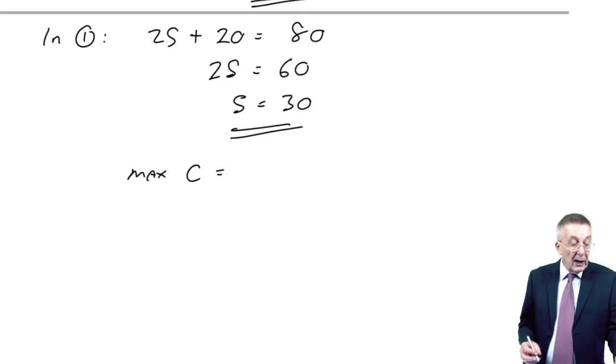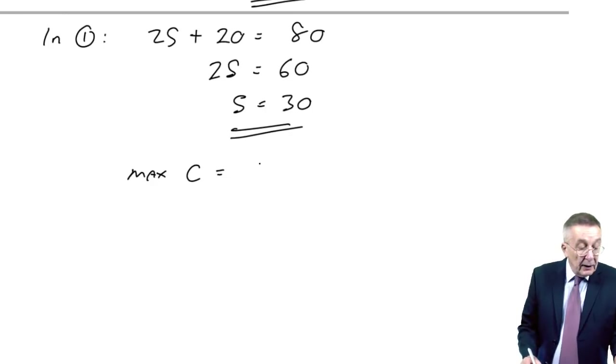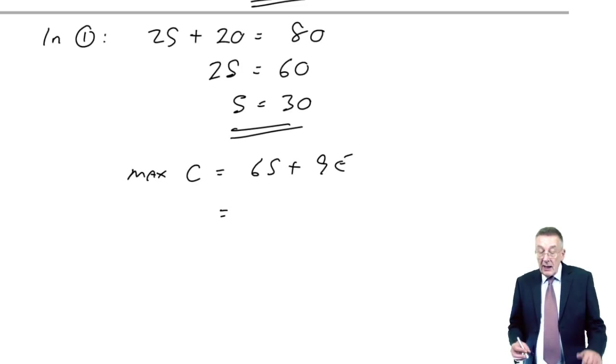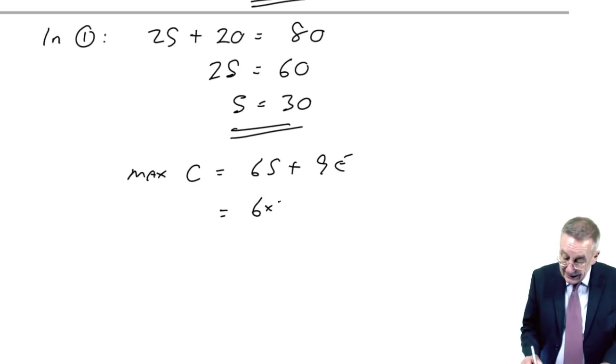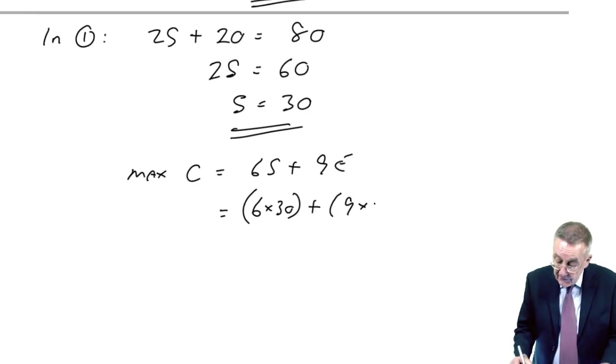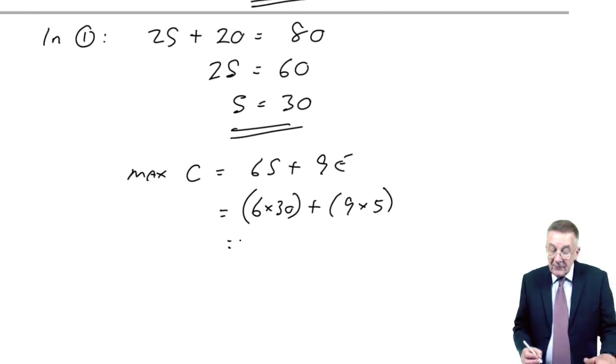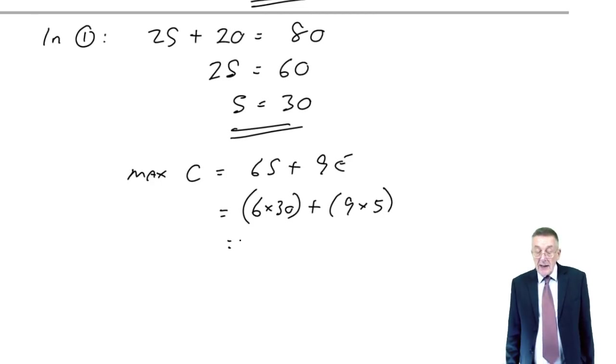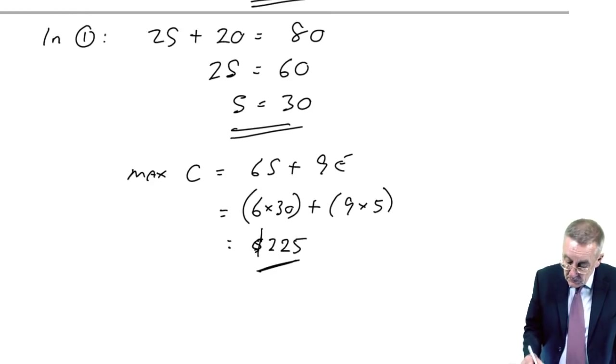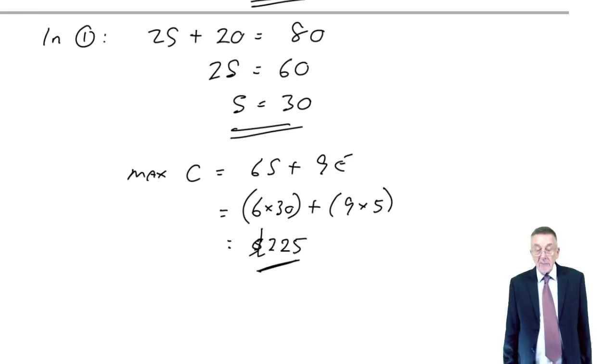The maximum contribution, we had the equation before, the contribution is 6s plus 9e. Well, s is 30, e is 5, and so the total contribution will be 180 plus 45, it will be 225. And there we are.